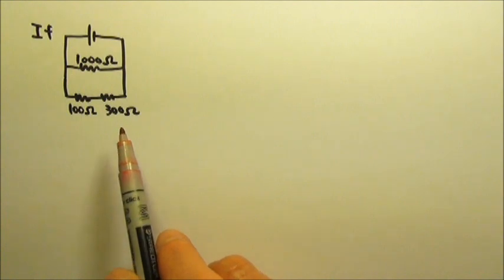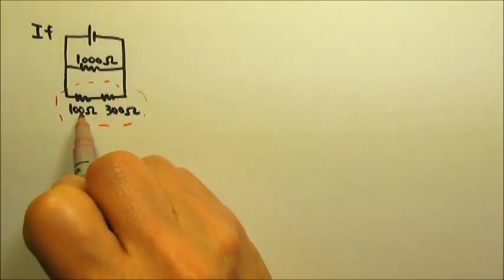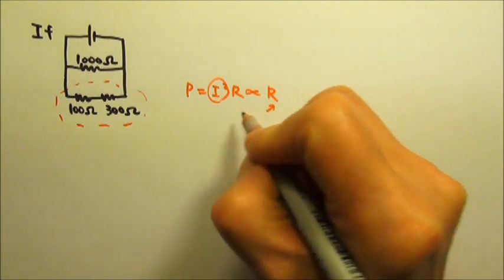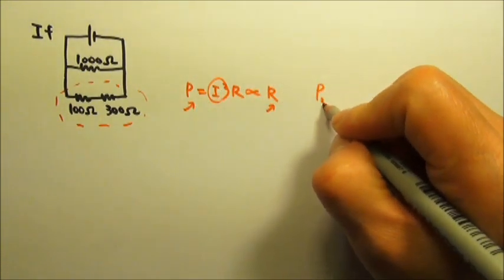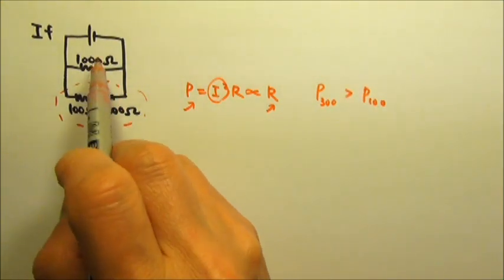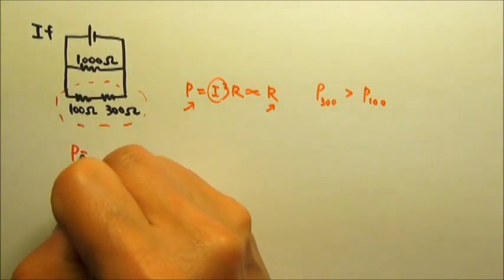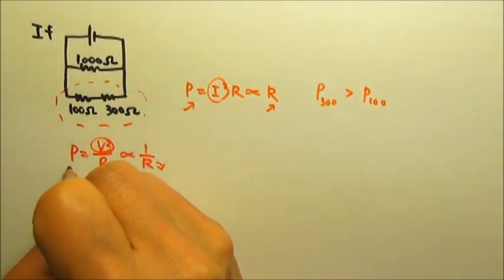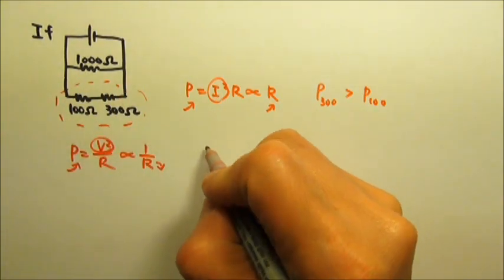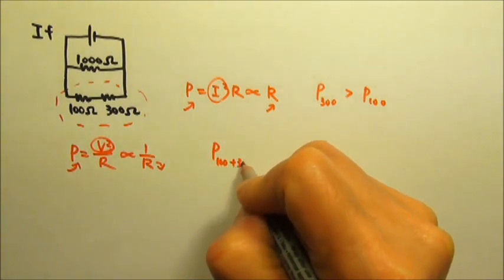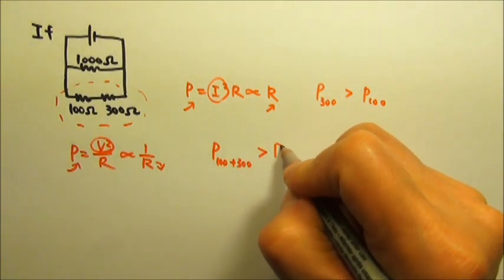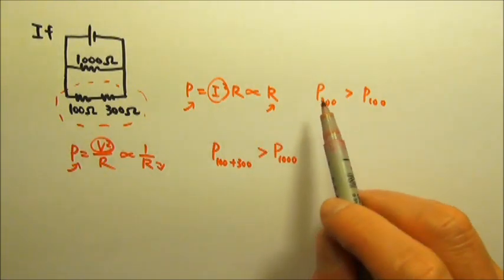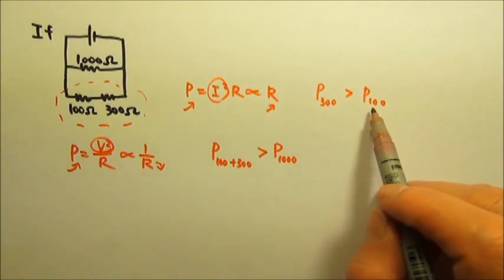What if the circuit is like this? We can, of course, do this again. They have the same current, so power equals I squared R. The power is proportional to R, so the one with the larger resistance consumes more power, so we know the power for 300 is more than 100. And then we can compare that to this combination. Since they have the same voltage, we can say this is proportional to 1 over R. So the one with the smaller resistance consumes more power. This combination is 400, so the 100 and 300 combination consumes more power than the 1000. That means now we cannot really tell where to place the 1000. It may be less than this one, in between the two, or more.